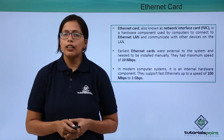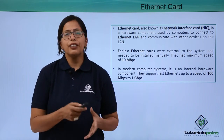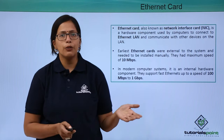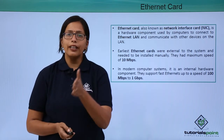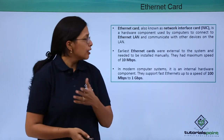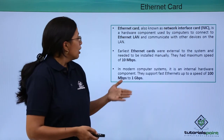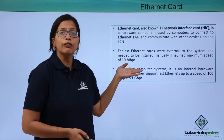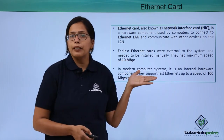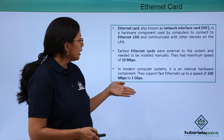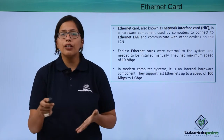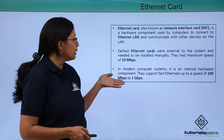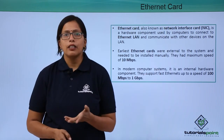In earlier computers, the NIC or the Ethernet card had to be installed externally. But now they are inbuilt on the motherboard of the system. The earlier Ethernet cards had a maximum speed of 10 megabits per second, but the internal ones in our modern systems have speeds up to 100 Mbps to 1 Gbps.